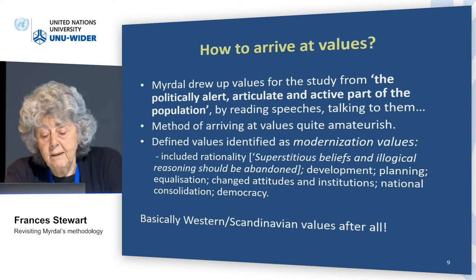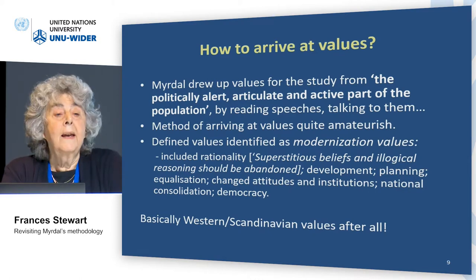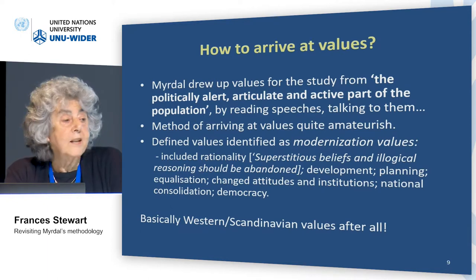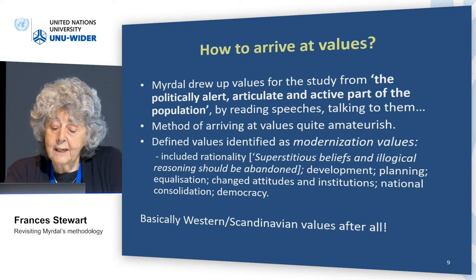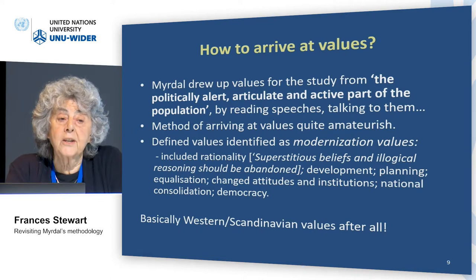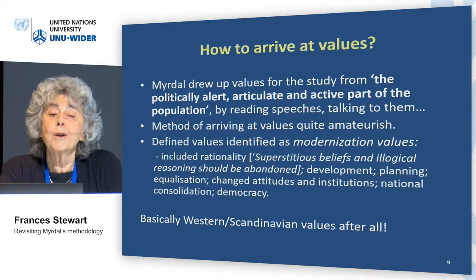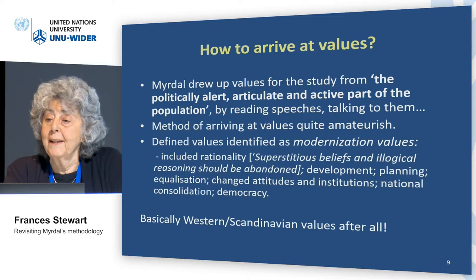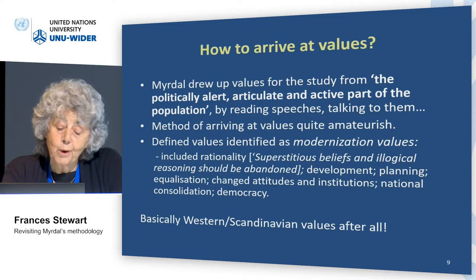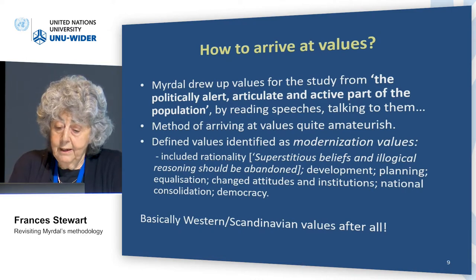So how did he arrive at them? He said he went to the politically alert, articulate, and active part of the population, read their speeches and talked to them, and came to a set of values which he called modernization values. They include rationality — superstitious beliefs and illogical reasoning should be abandoned — development, planning, equalization, changed attitudes and institutions, national consolidation, democracy. Look at those values carefully. What are they? They are Scandinavian values. So despite all the talk about the beam in his eye, the beam came out again here, because the method of arriving at values was to talk to people who already basically agreed with the Western observer — in this case, Gunnar Myrdal. So although I very much accept what he says about why we should look at other people's values, I don't think that he did so. He just took his own values, really.